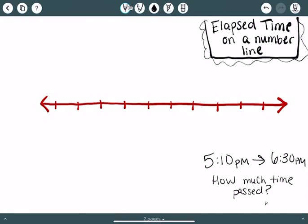A way to do that using a number line is I go ahead and write my starting time. So remember I started at 5:10 p.m. and I decide that an easy way for me to figure this out is to go by tens each time, by 10 minutes.